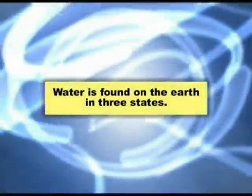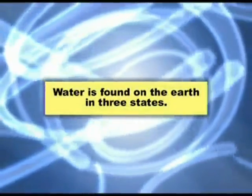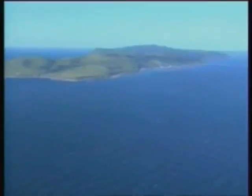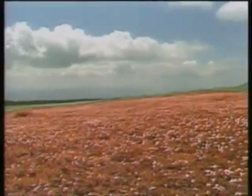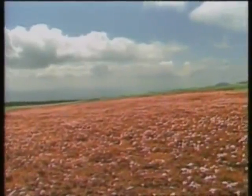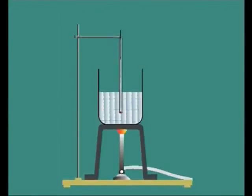Wells, tube wells, ponds, lakes, and rivers are all sources of water. They are replenished by rainwater. Water is found on the earth in three states: water in wells, lakes, rivers, seas, and groundwater is in the liquid form. In the polar regions and at the tops of high mountains, water is in the form of ice — that is, in the solid form. Water in air is in the form of vapor, or in gaseous form.